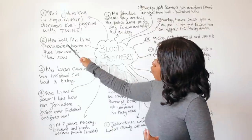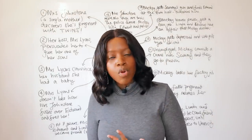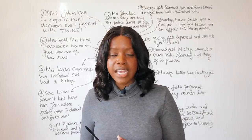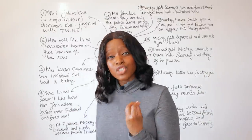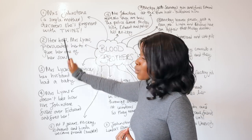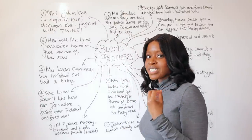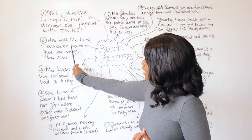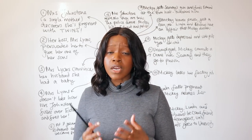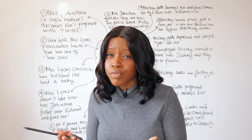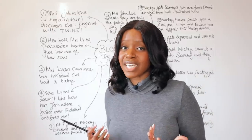She works for a lady called Mrs. Lyons, an upper-middle-class woman whose husband is very financially stable. Mrs. Lyons is a stay-at-home woman who has been wanting to have a child for a long time but is unable to bear her own children. When she realises her cleaner Mrs. Johnstone is pregnant, she makes a Faustian pact with her, persuading Mrs. Johnstone to part with just one of her sons, promising to look after him well.